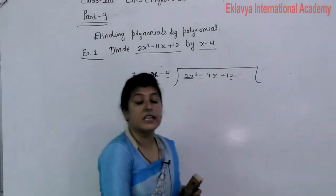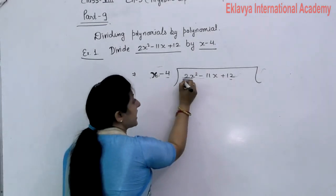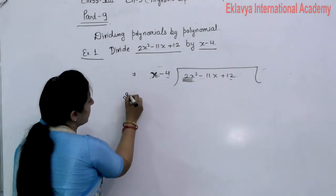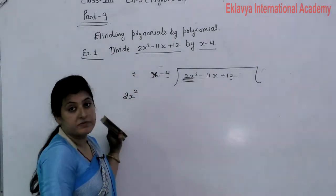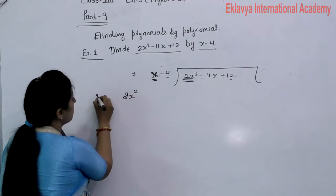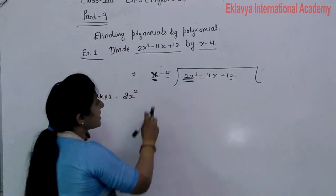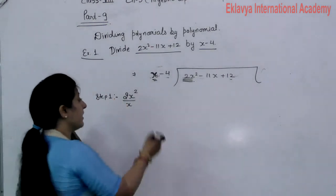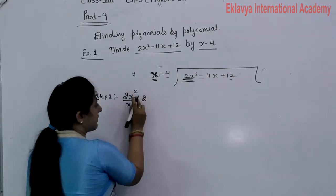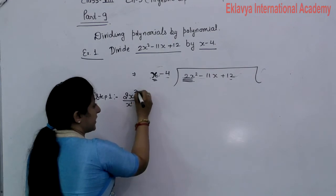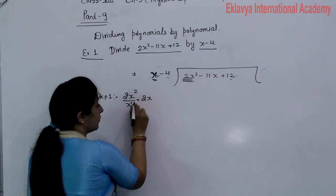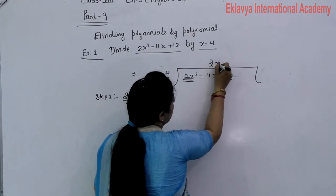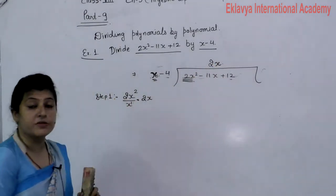For the question x minus 4 dividing 2x squared minus 11x plus 12: firstly check what is the first term of the dividend. The first term of the dividend is 2x squared. The first term of the divisor is x. Then 2x squared divided by x: x power 2 divided by x power 1 gives x power 1, so it equals 2x. Write this 2x as the first term of the quotient.